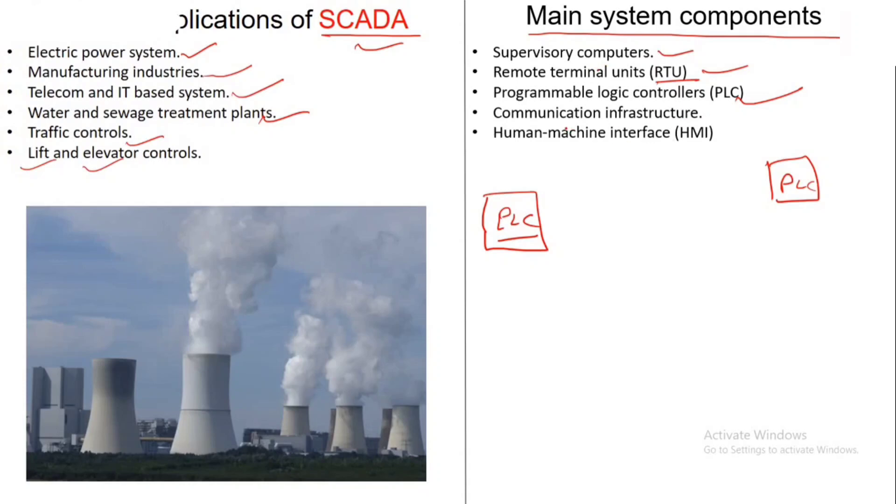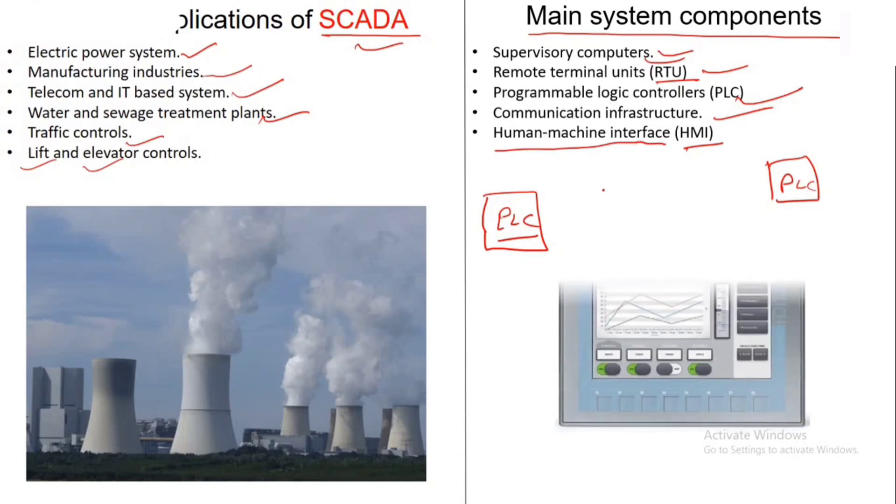The communication and infrastructure connects the RTU, PLC and HMI. We connect them to the supervisor computer. Then we connect them to the HMI - that means human-machine interface. What is human-machine interface? It's called GUI - Graphic User Interface. We can control our process and watch our process.